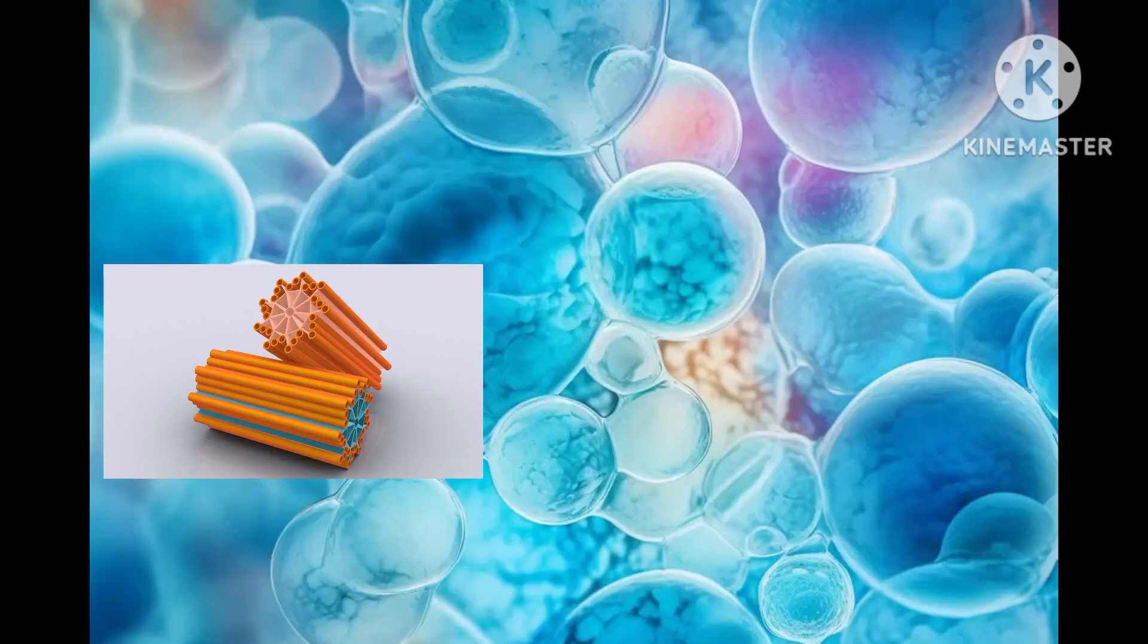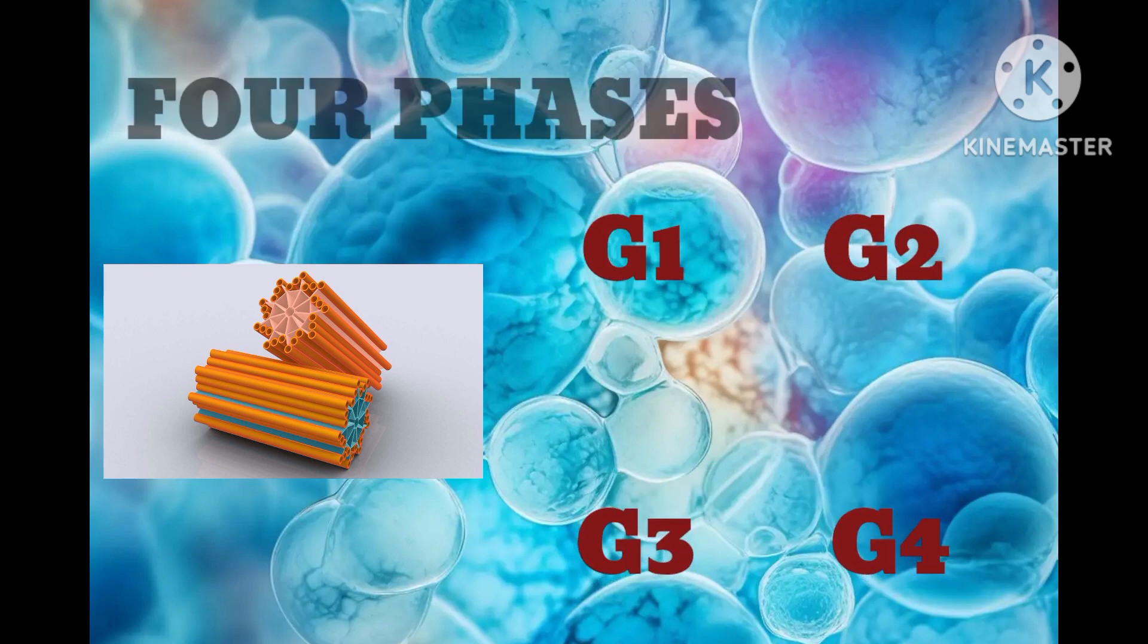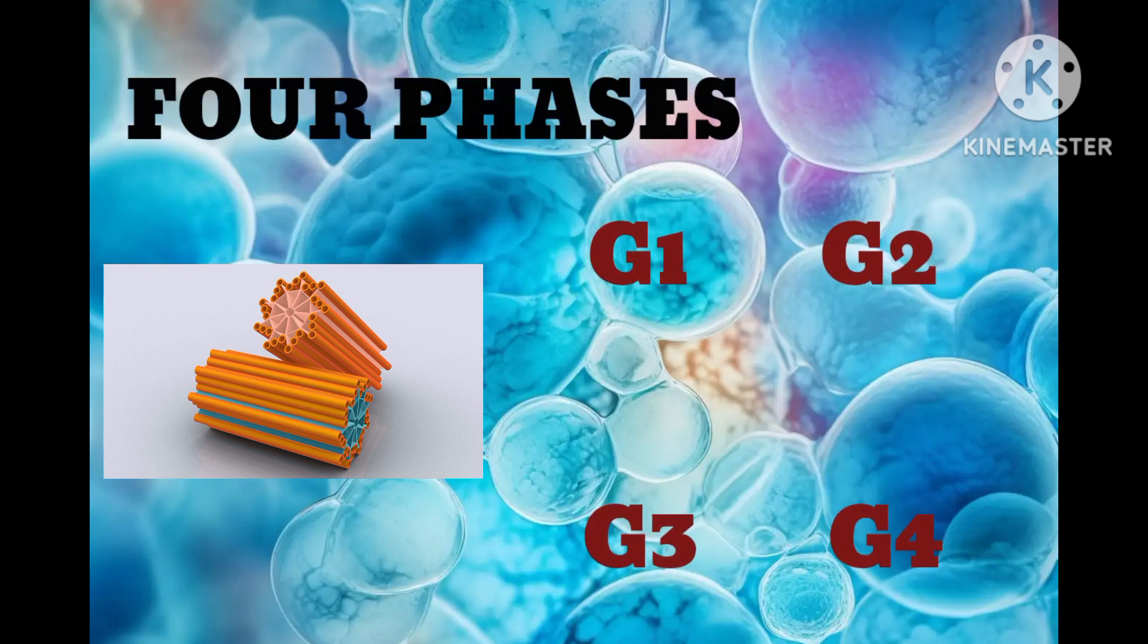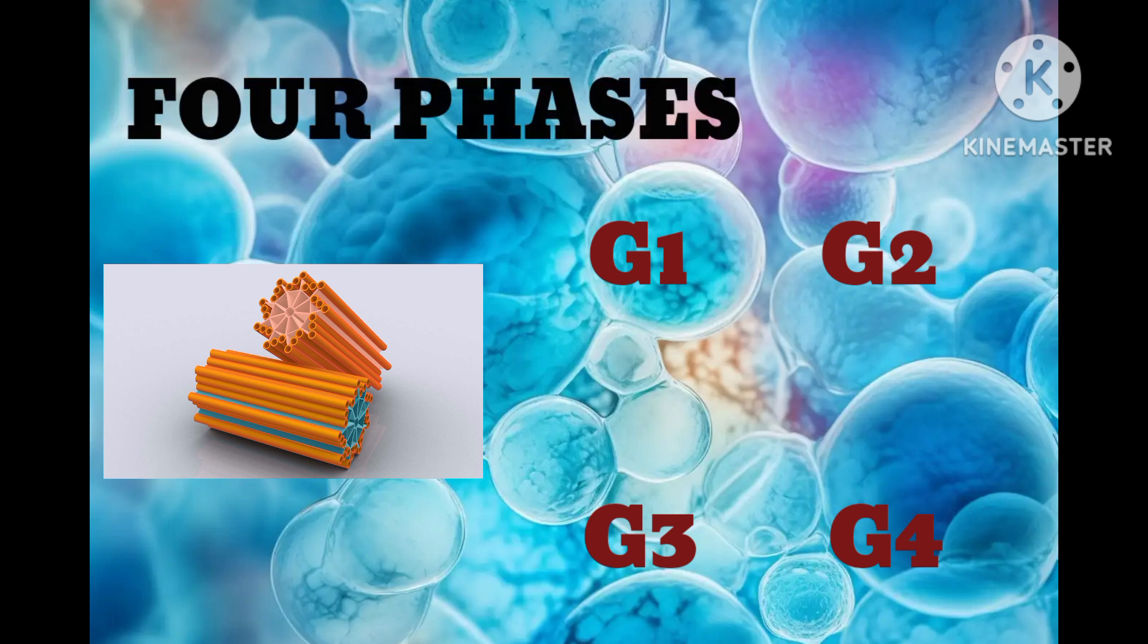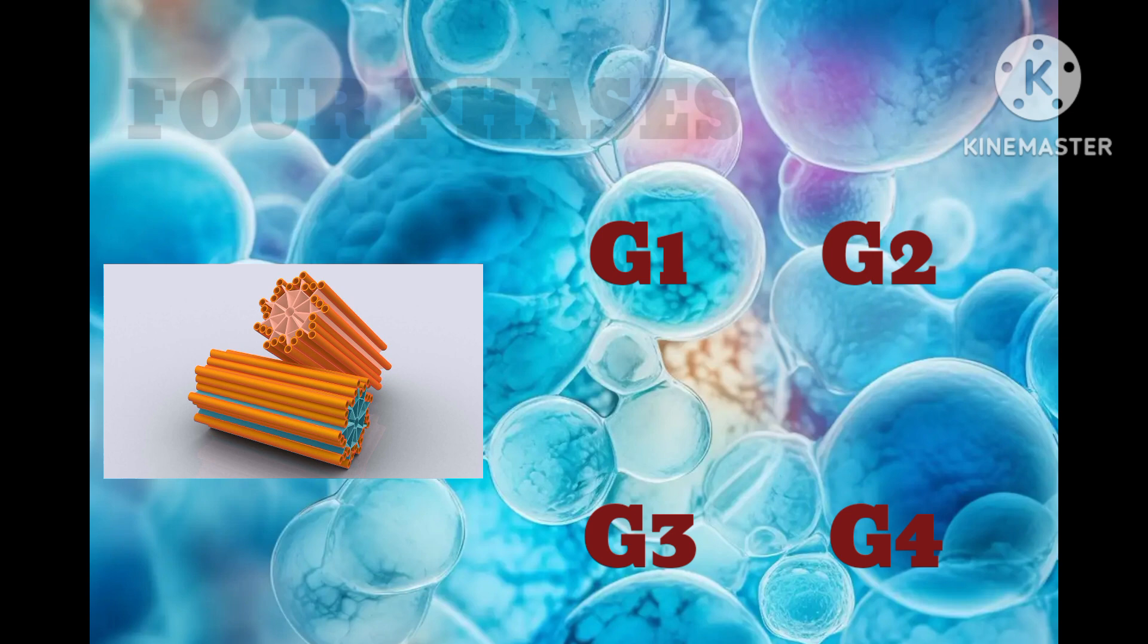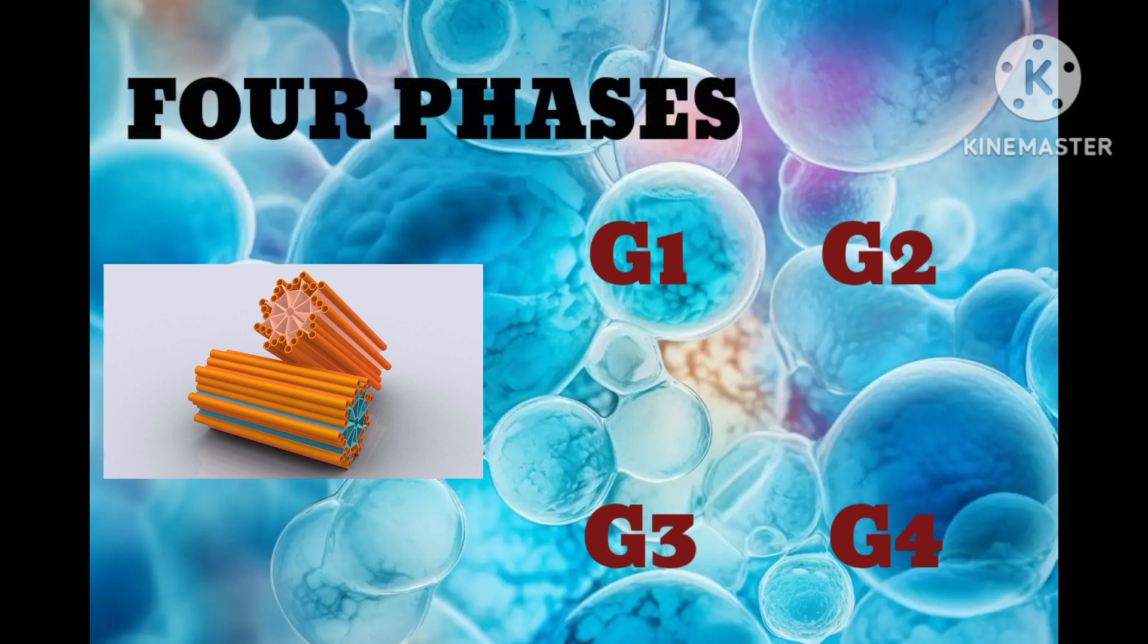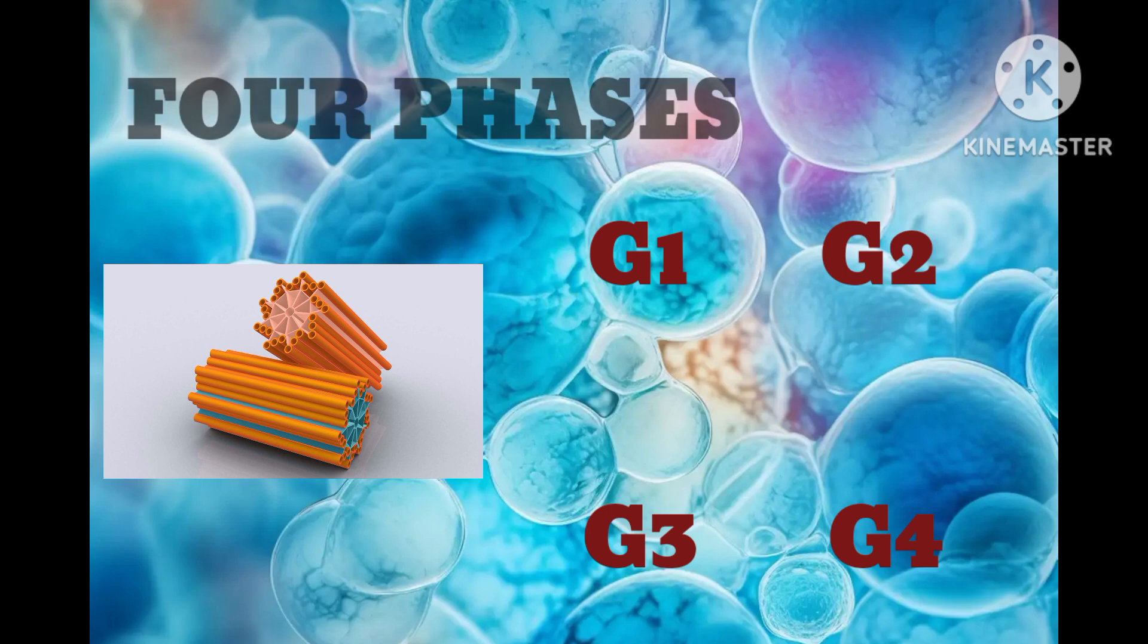The centrosome cycle consists of four phases. First is G1 phase where the duplication of centrosome takes place. Second is G2 phase where centrosome maturation takes place. Third is the mitotic phase where centrosome separation takes place. And fourth is late mitotic phase where chromosome disorientation takes place.